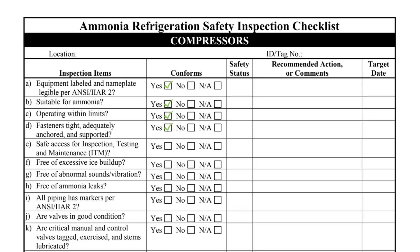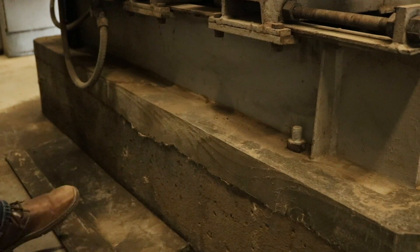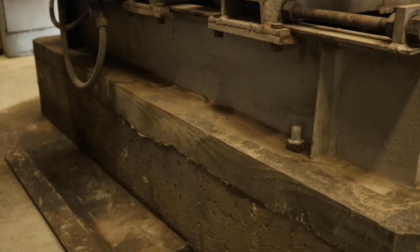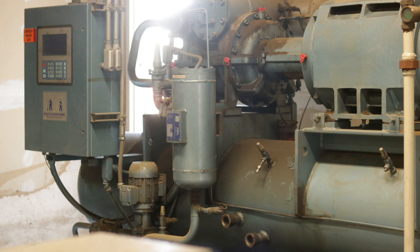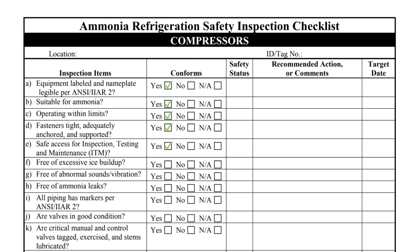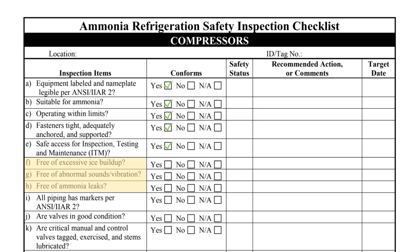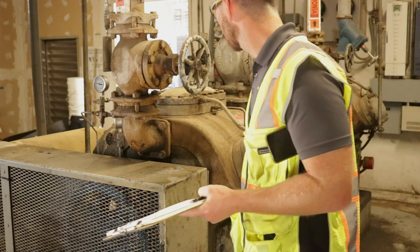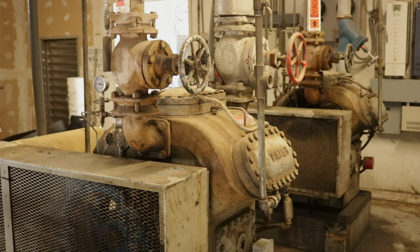Item D requires the inspector to verify that supports and anchorage are adequate; the anchorage should be inspected to ensure nuts are tight and free from corrosion. The compressor should have safe access for normal service and maintenance — this screw compressor is compliant in that regard. The inspector must do a visual inspection of the entire compressor to verify the equipment is free from excessive ice buildup, vibration, and leaks, inspecting from all sides where possible to avoid missing a deficiency.